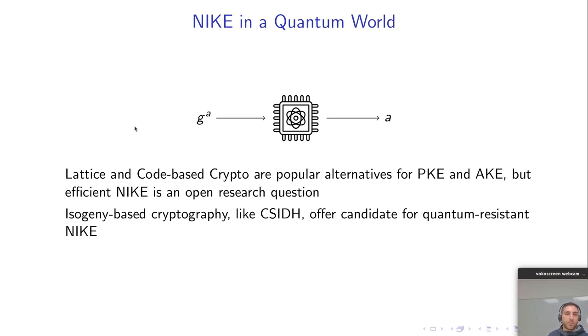For lattices and codes it's an open research question to build efficient NIKE. But from isogeny-based cryptography like CSIDH we have a candidate for quantum-resistant NIKE.